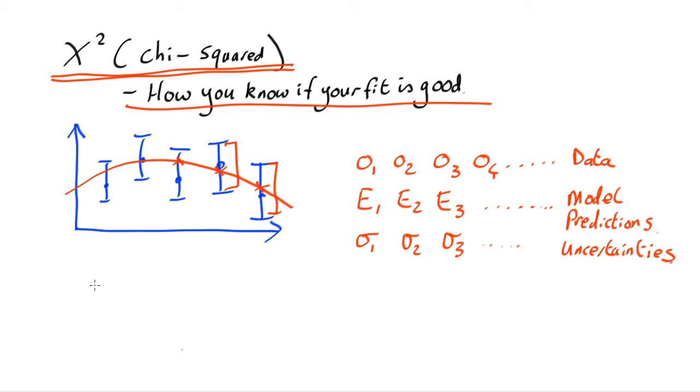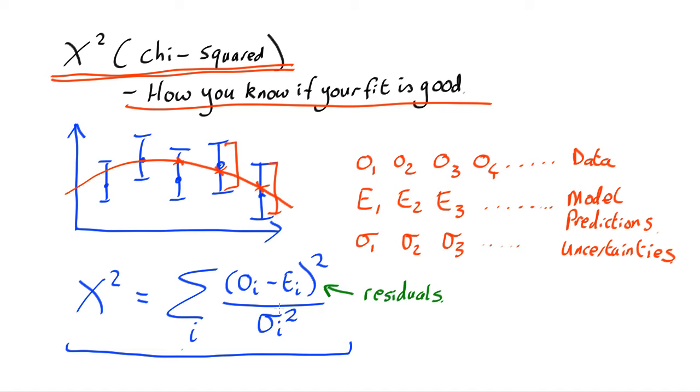The chi-squared parameter is equal to the sum of all the different data points of the observed value minus your model prediction for the same one. That's the residual here. Square them all and divide them by the uncertainty in the same value. So what you're looking at is the residual divided by the error all squared.